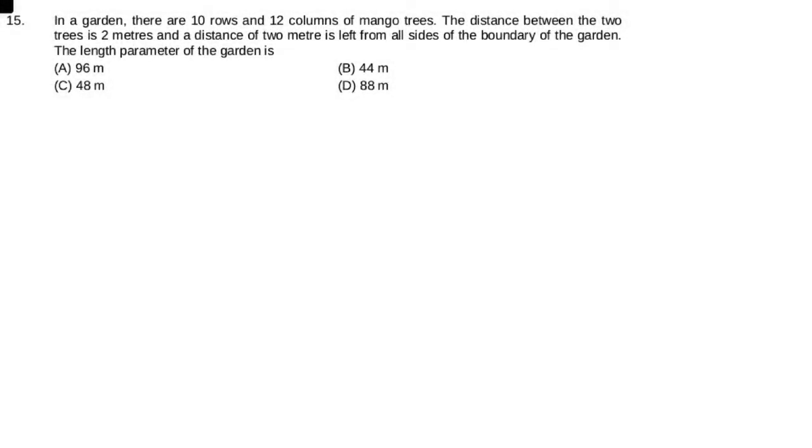In this question, in a garden there are 10 rows and 12 columns of mango trees. The distance between two trees is 2 meters and a distance of 2 meters is left from all sides of the boundary of the garden.